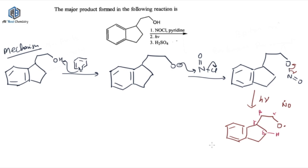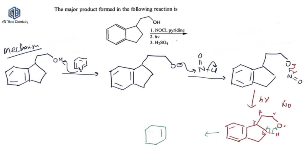This is nothing but your Barton reaction — Barton reaction is a kind of photochemical reaction. I will give you a link in the i-button if you don't know about it. What happens in Barton reaction is that your delta hydrogen is abstracted by this oxygen radical and an alcohol is formed. This bond will be homolytically cleaved and this hydrogen will be abstracted by oxygen to form an alcohol, giving you OH.